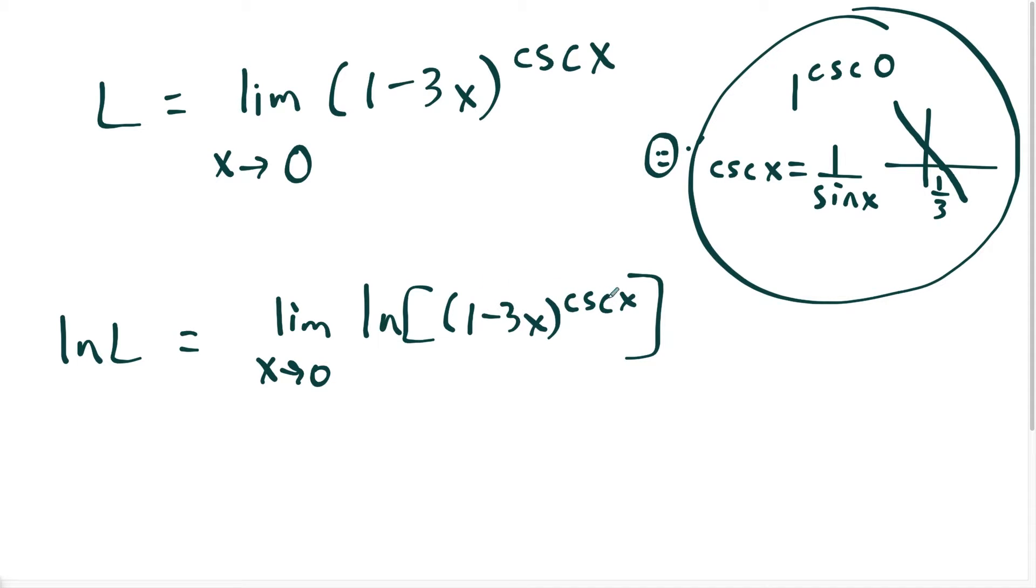So from here, what we're going to do is use the property of natural log, and we could bring this exponent out in front as a coefficient. So we'll have natural log of L equals the limit as x approaches zero, and the cosecant x will come out in front like this, and we have natural log of one minus three x. But now we could use that identity again, that we're technically multiplying this natural log expression by one over sine x. So now I could say that this is the limit as x approaches zero, and we have natural log of one minus three x over sine of x.